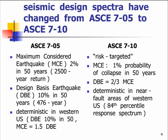The design basis earthquake was two-thirds as strong as the maximum considered earthquake, and it had a probability of exceedance of 10% in 50 years — which corresponds to a 476-year return period. In the western United States, ASCE 7-05 modified the statistical procedure based on deterministic experience, where we have many more recorded earthquakes. The design basis earthquake would have a 10% probability of exceedance in 50 years, and the maximum considered earthquake was taken as one and a half times the design basis earthquake.